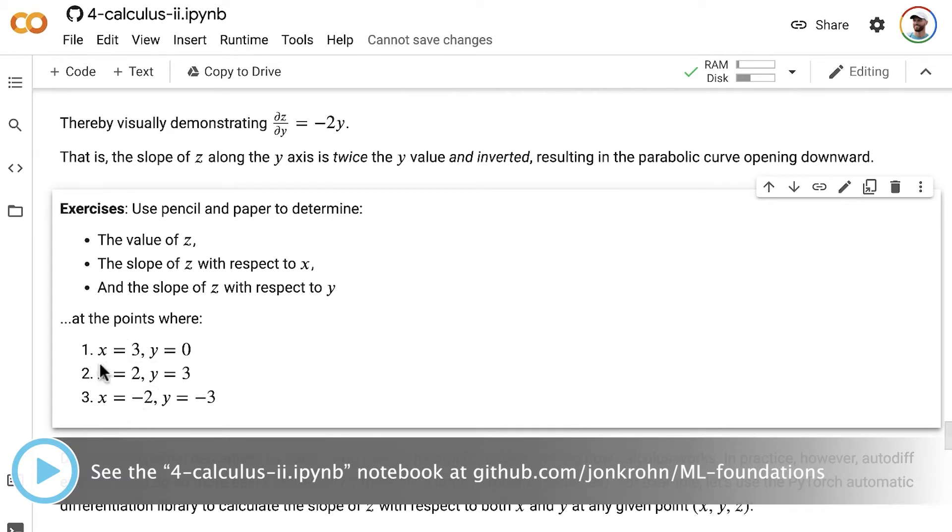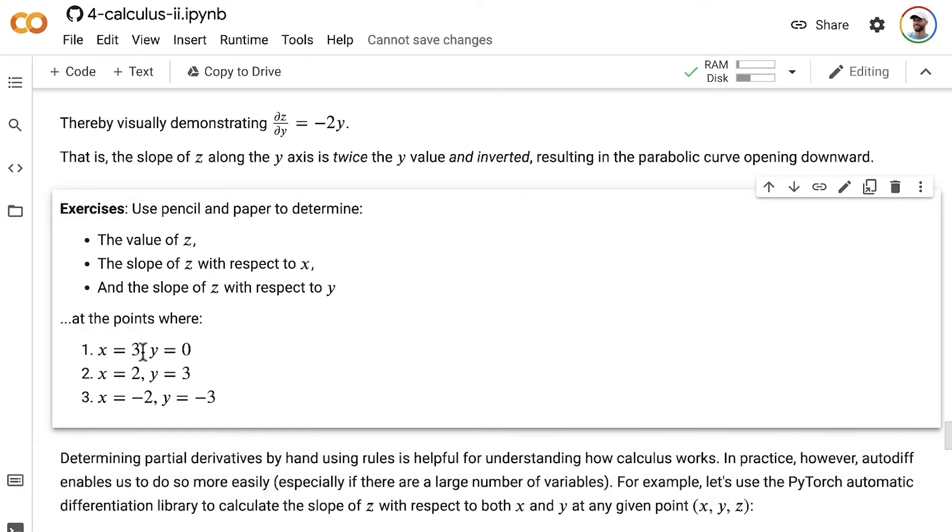Let's say for exercise one, we take into consideration a point where x is equal to 3 and y is equal to 0. Then, for that point, use pencil and paper or a whiteboard or whatever you have available to you to calculate the value of z. This is using the function that we've used throughout this notebook so far, which is z equals x squared minus y squared.